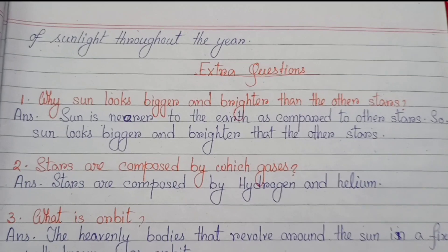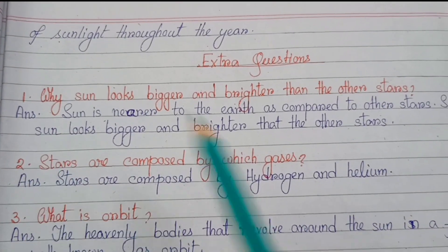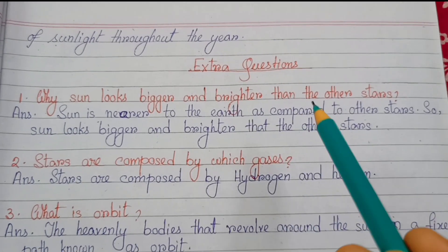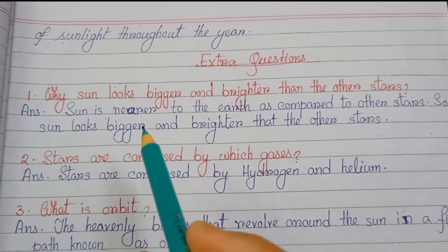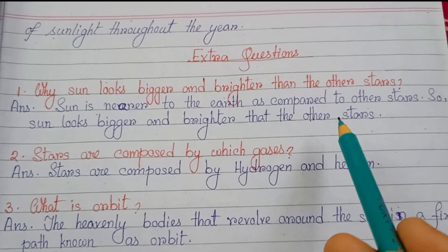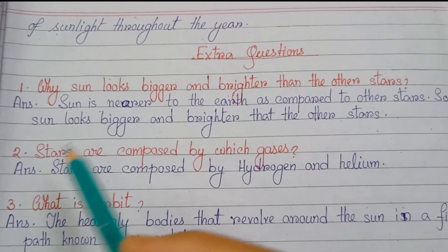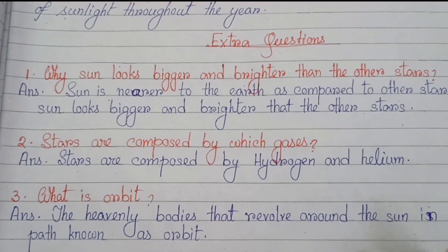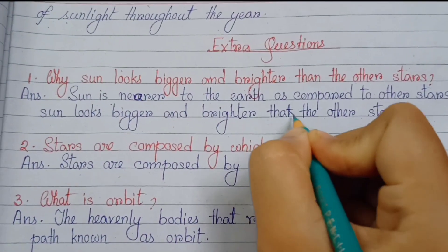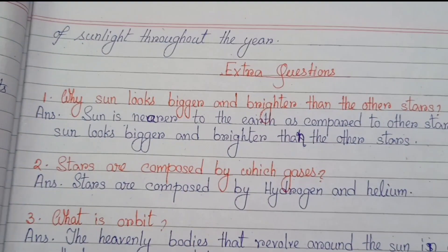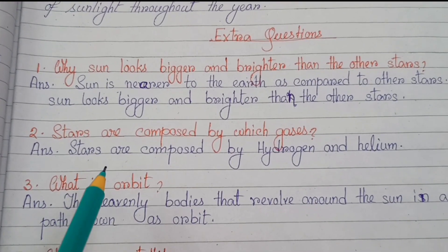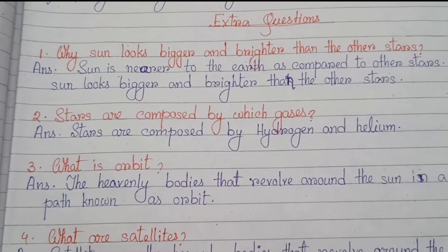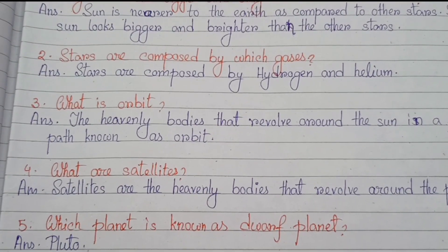Now we will solve some extra inside question answers from the chapter. Number one: Why does the sun look bigger and brighter than the other stars? The sun is nearer to the earth as compared to other stars, so the sun looks bigger and brighter than the other stars.